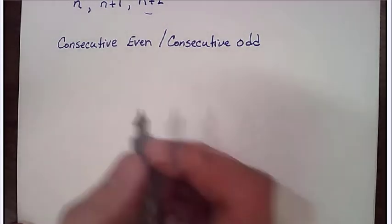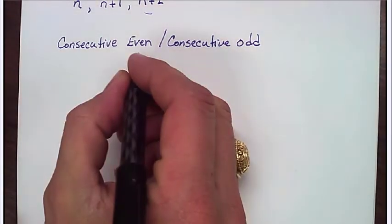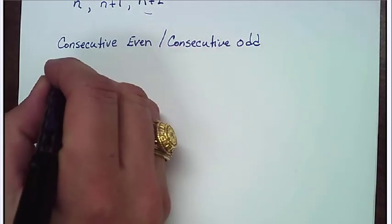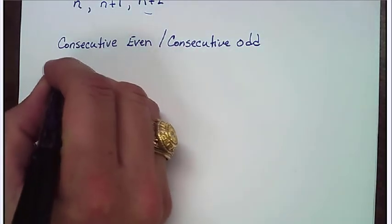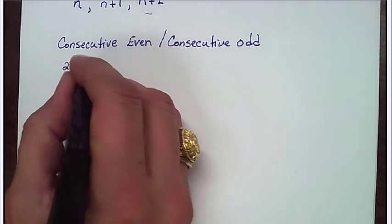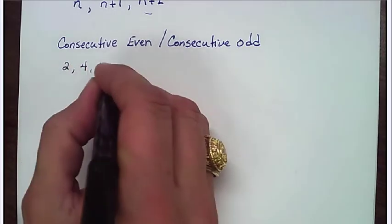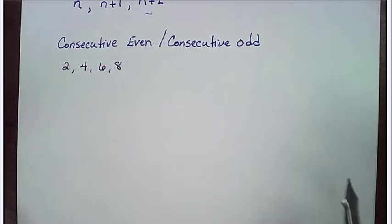And that is, look, if we're dealing with consecutive even, I'm looking for one even number right after another. So this looks like 2, 4, 6, 8, or maybe 10, 12, 14, 16.